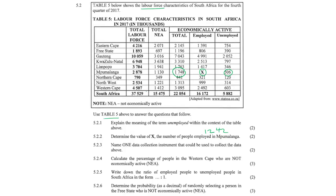That amount is 1412 over the total labour force of 4507, multiplied by 100. So 1412 divided by 4507 — in thousands, you can add the zeros but they cancel out — times 100, gives 31.329%.